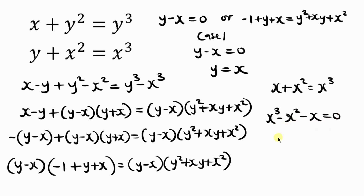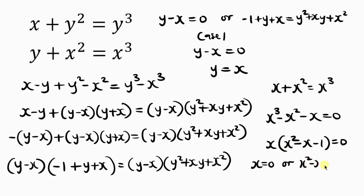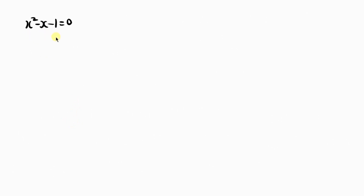Let's factorize: x is common, so we get x times x squared minus x minus 1 equals 0. From here, x equals 0, or x squared minus x minus 1 equals 0. For this second equation we apply the quadratic formula: x equals negative b plus or minus square root of b squared minus 4ac, all divided by 2a, with a equals 1, b equals negative 1, c equals negative 1.